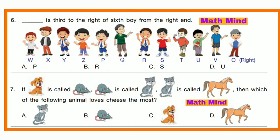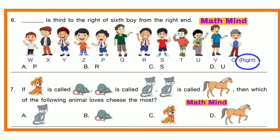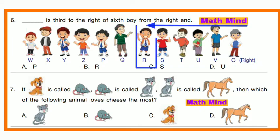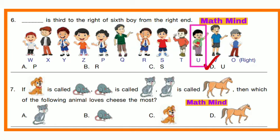Question No. 6: Dash is third to the right of the sixth boy from the right end. The sixth boy from the right end is R. The third to the right of R is U. Option D is correct.